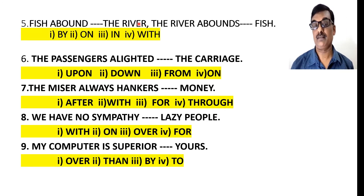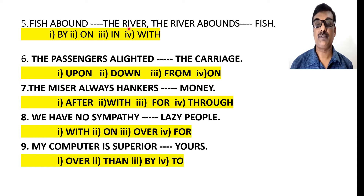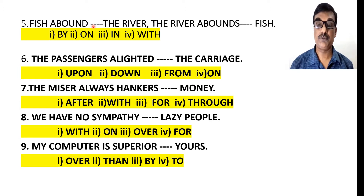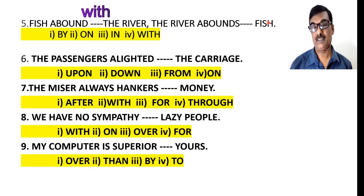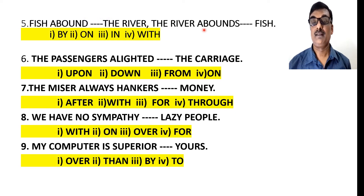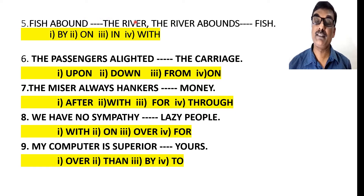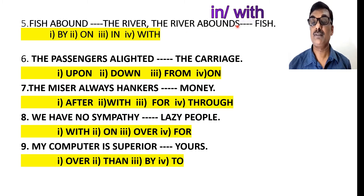Next: 'Fish abound [blank] the river' and 'The river abounds [blank] fish.' I have taken both examples because there is a contrast. For 'Fish abound [blank] the river,' the answer is 'in.' The word 'abound' generally takes 'in,' so 'The river abounds in fish.' However, for 'Fish abound [blank] the river,' the answer is 'with.' Note the contrast: 'Fish abound with the river,' but 'The river abounds in/with fish' — both 'in' and 'with' are used in the second case.